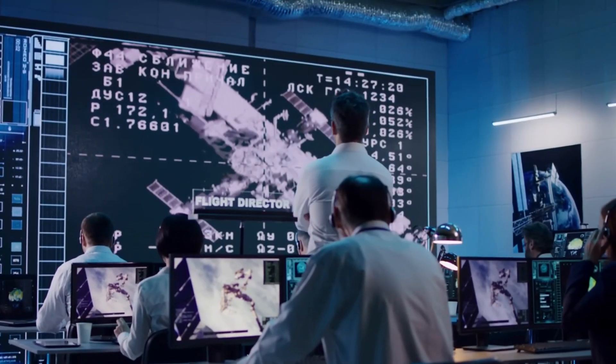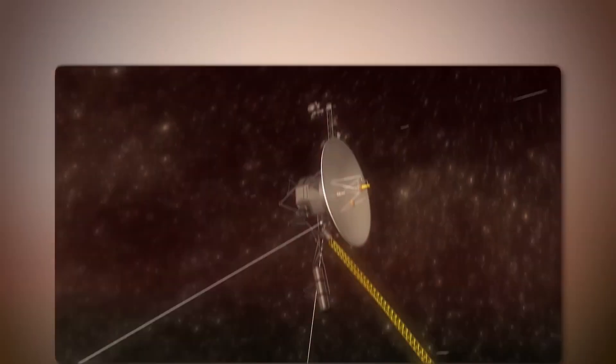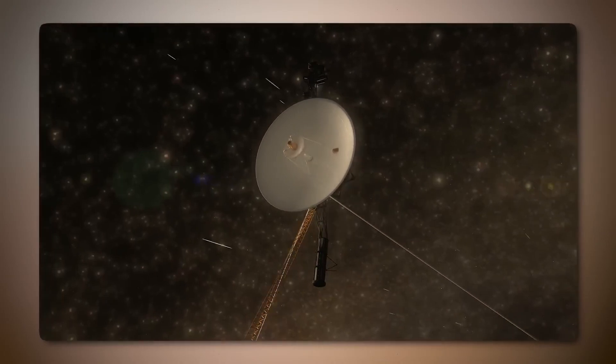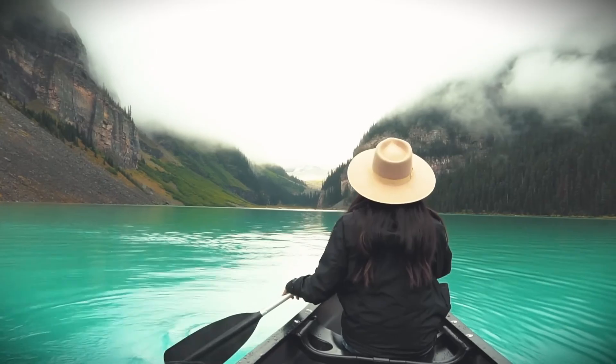By analyzing this data, scientists pinpointed Voyager 1's official entry into interstellar space to August 25, 2012, using electron oscillation measurements and observations of charged solar particles. Voyager 2 followed suit, crossing into interstellar space six years later, confirming the profound scientific significance of these twin spacecraft.